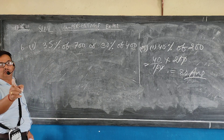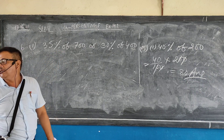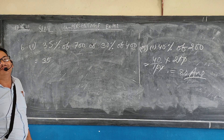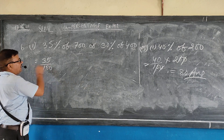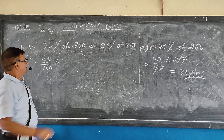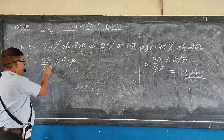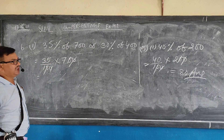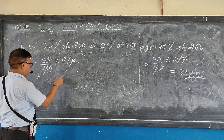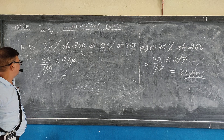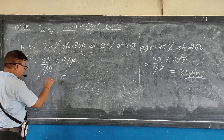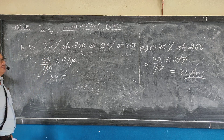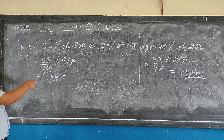35 percent of 700: divide with 100, cancel the 10s. Now find the product 35 into 7. 7 into 5 is 35, carry 3; 7 into 3 is 21, plus 3 is 24. So 35 into 7 equals 245.